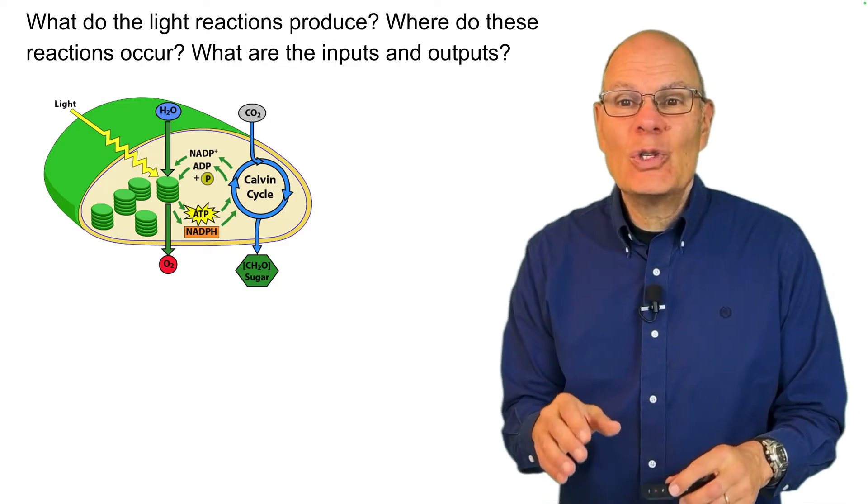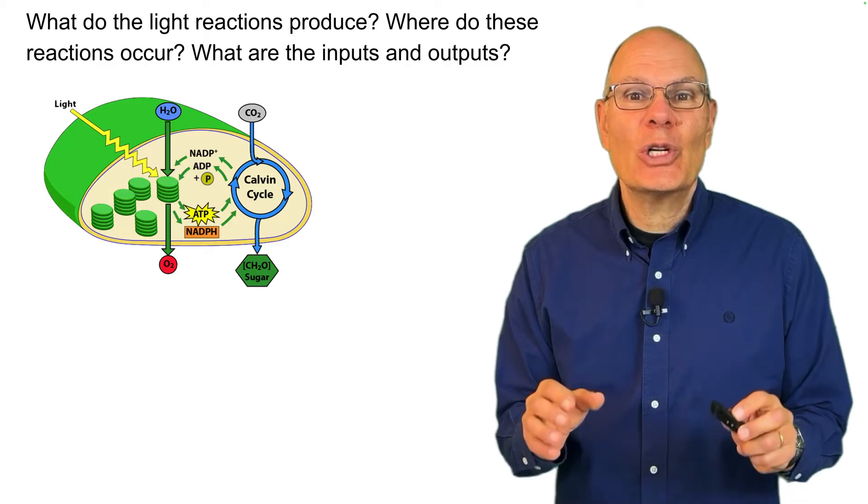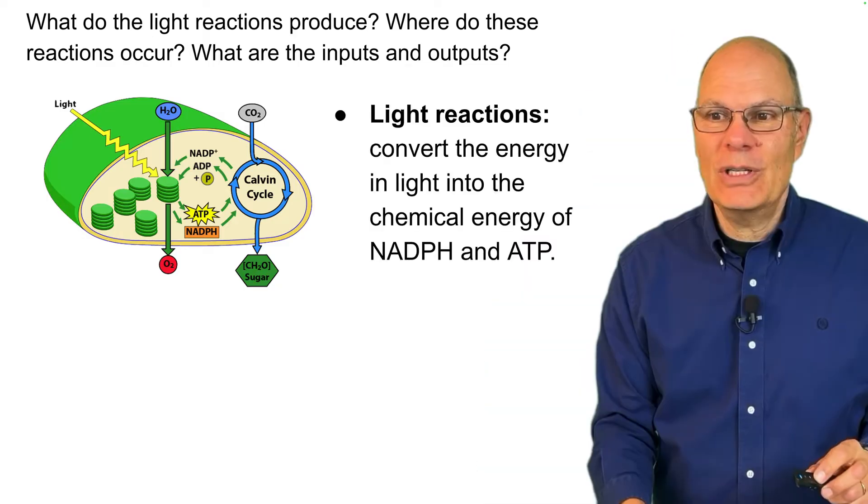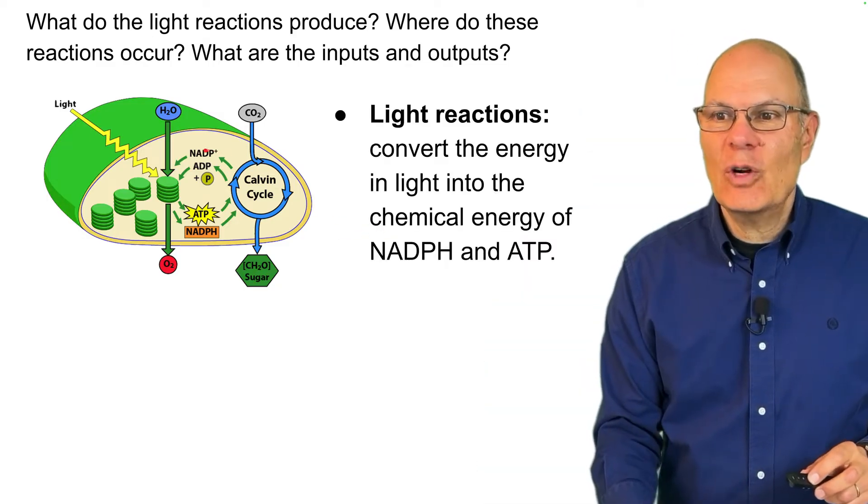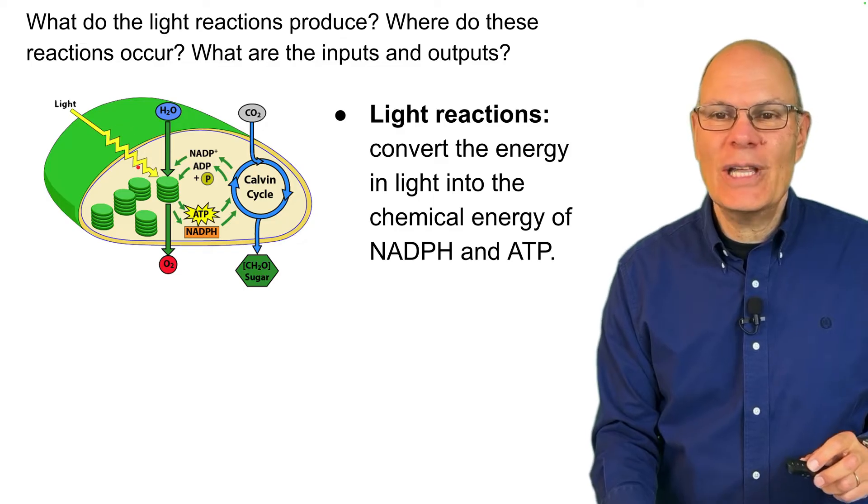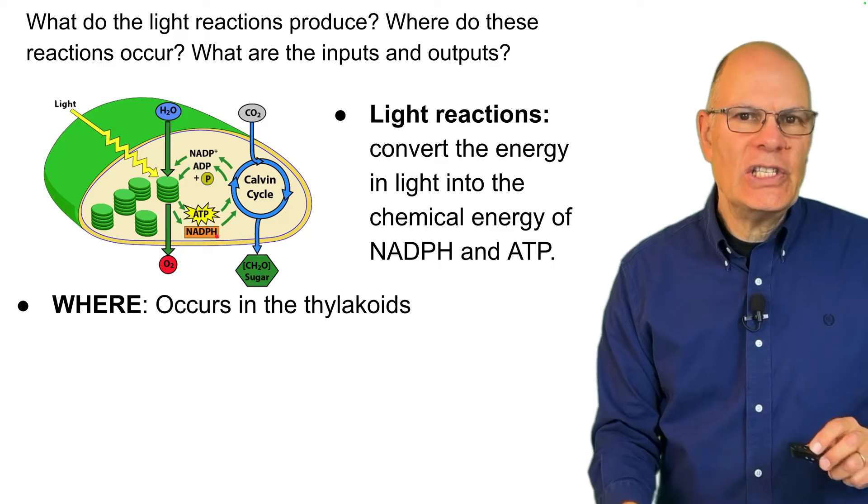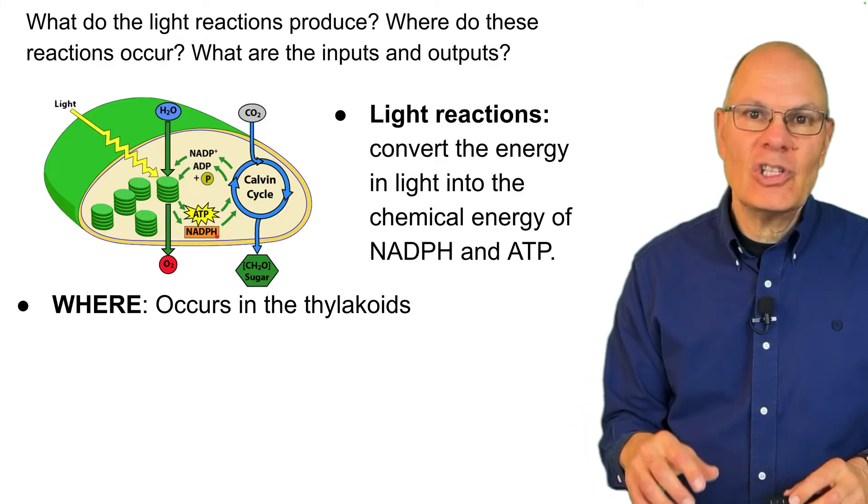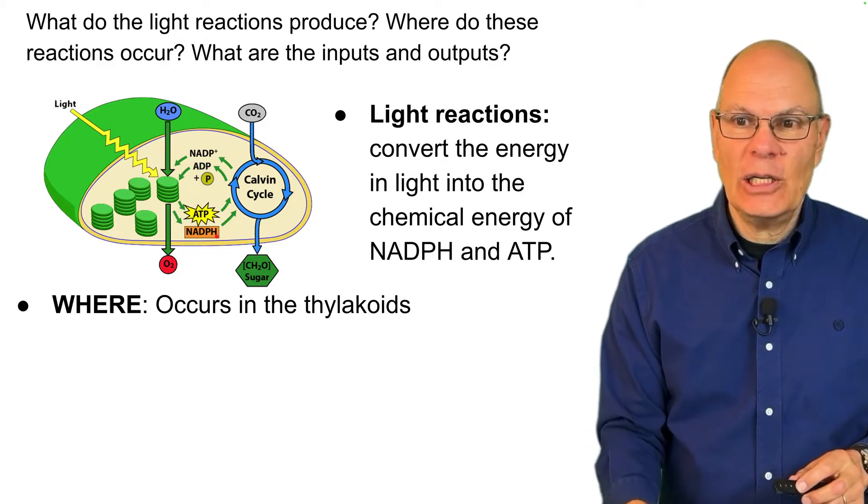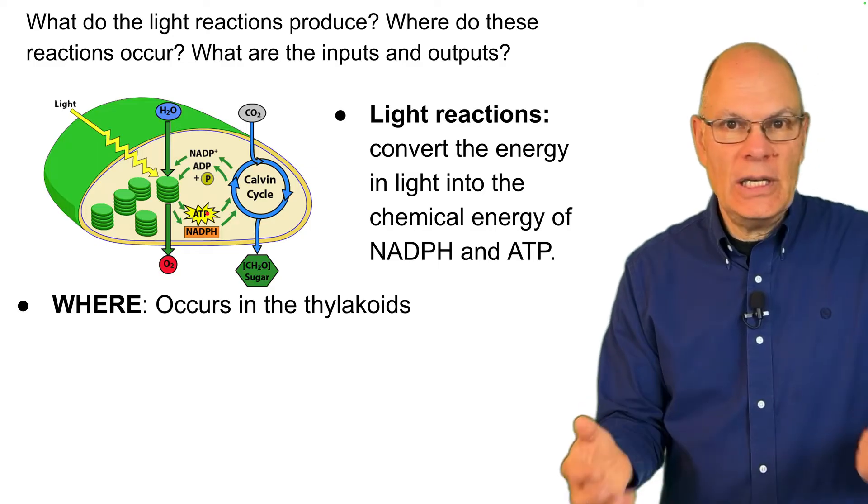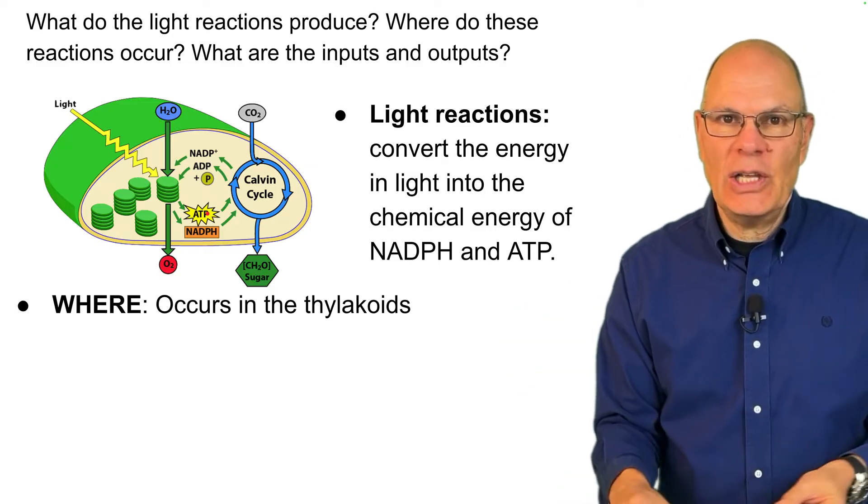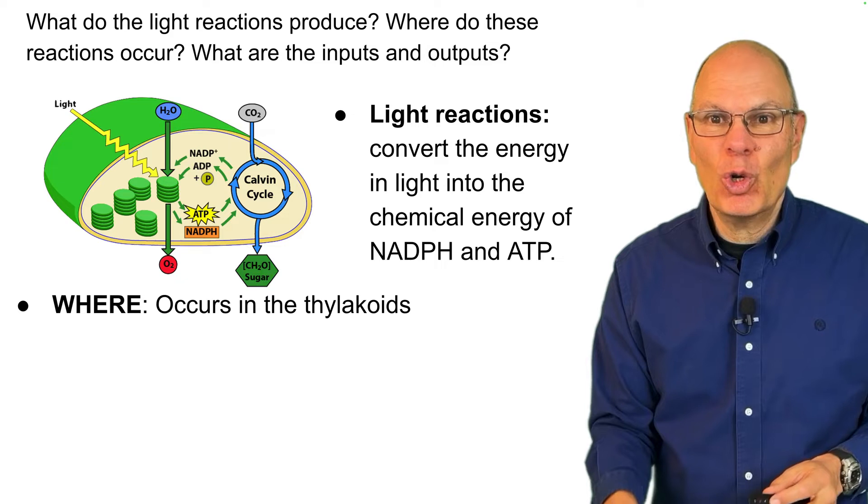What do the light reactions produce? Where do these reactions occur? What are the inputs and the outputs? The light reactions convert the energy in light into the chemical energy of NADPH and ATP. NADPH is an electron carrier. It's like NADH in cellular respiration.